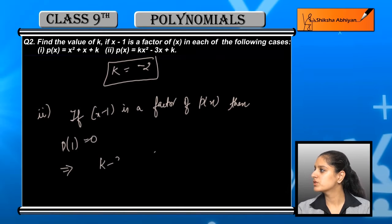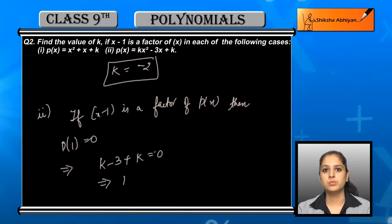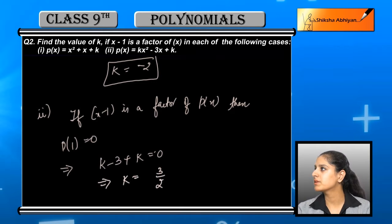This gives 2k minus 3 equals 0, so k equals 3/2. The value of k is ultimately 3/2.